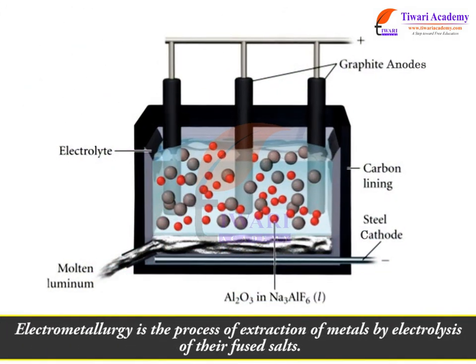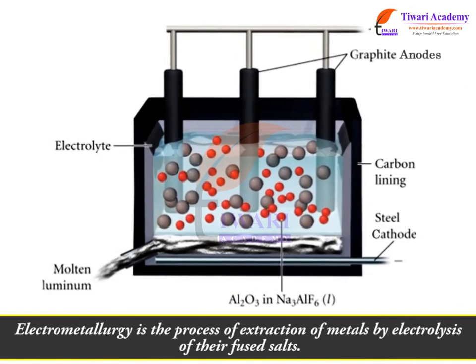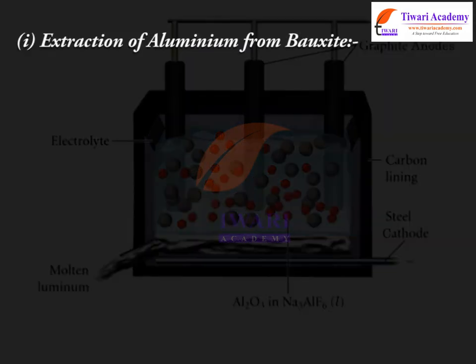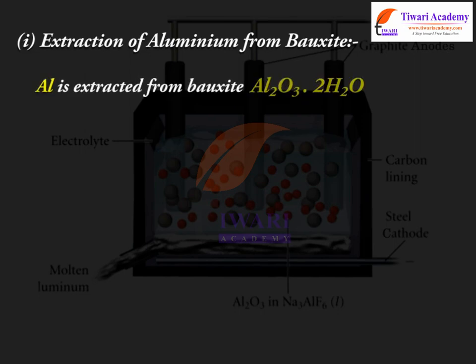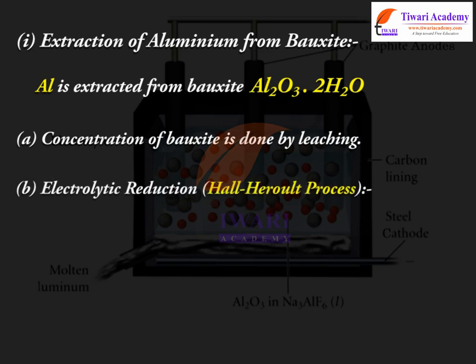Electrometallurgy is the process of extraction of metals by electrolysis of their fused salts. Extraction of aluminium from bauxite: Al is extracted from bauxite (Al₂O₃·2H₂O). Concentration of bauxite is done by leaching, followed by electrolytic reduction using the Hall-Héroult process.